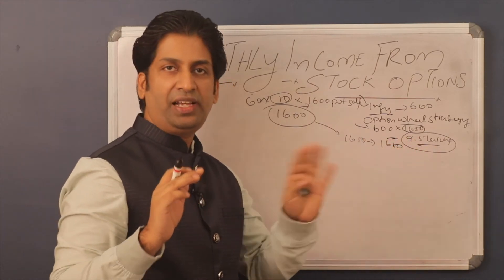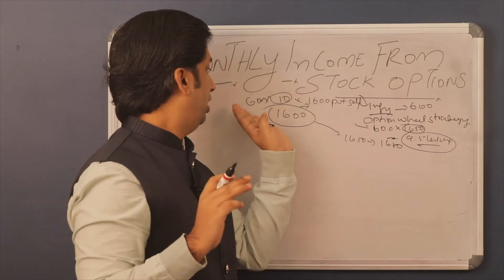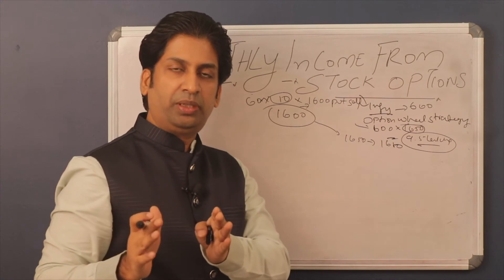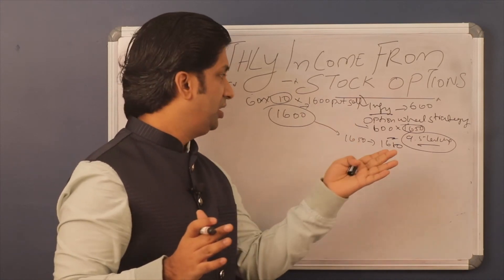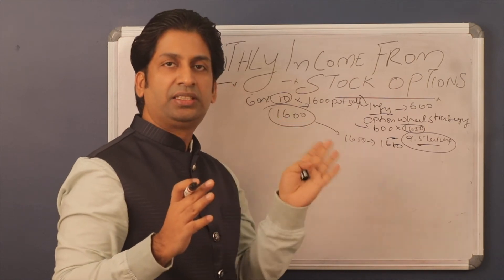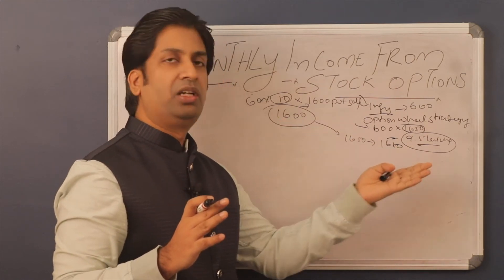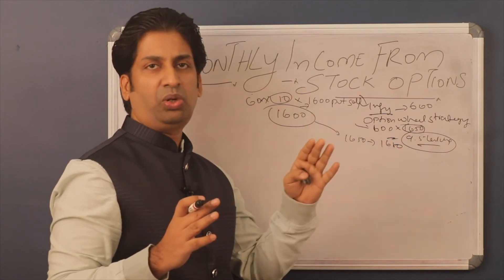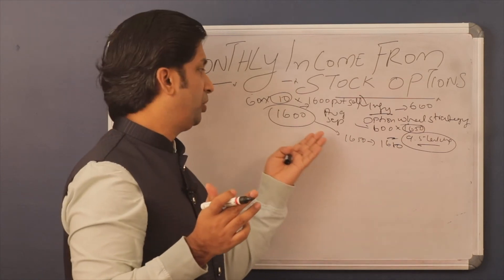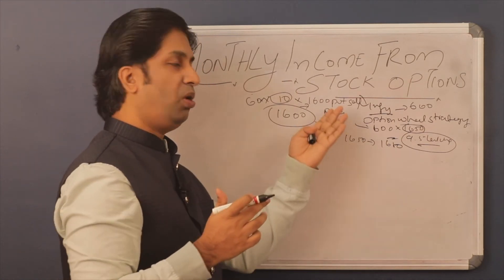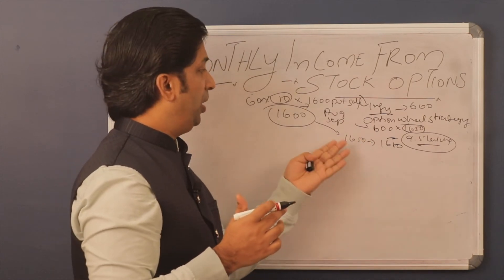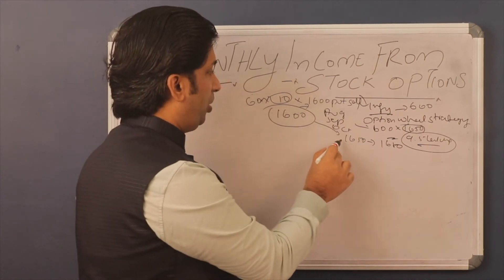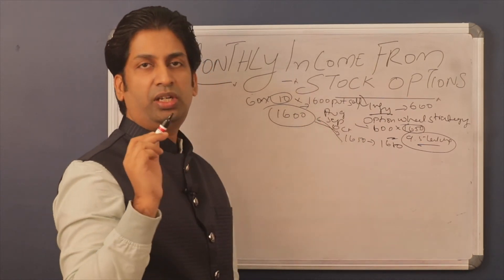Let's assume the put option is priced at 10 rupees, so 600 into 10 gives us 6,000 rupees. We have not deployed the full 9.5 lakhs capital — we only need about 2 lakhs of margin to sell one stock option. In September, if Infosys again doesn't reach 1600, we collect another 6,000 rupees — that's 12,000 rupees over two months. But in October, Infosys stock price reaches 1600.